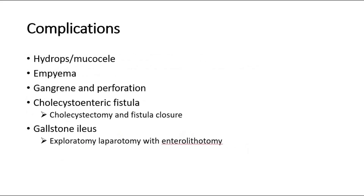These are the complications of acute cholecystitis. First, hydrops or mucocele: when there is cystic duct obstruction, it leads to a tense gallbladder filled with mucus, which we call hydrops. Empyema is when the gallbladder is filled with pus due to bacterial infection of the stagnant bile.